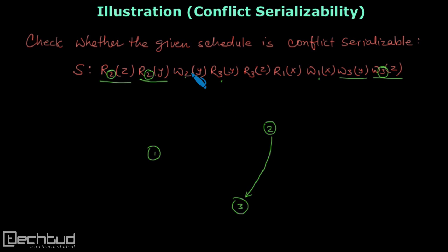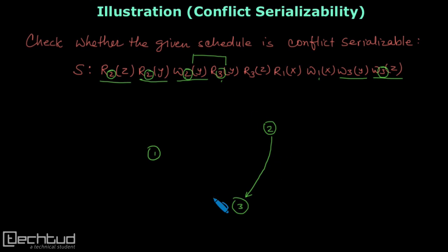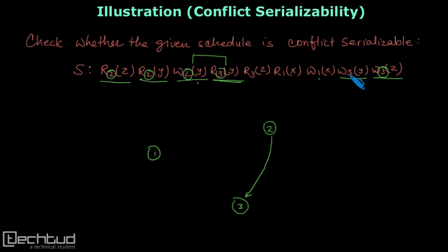Now, W2Y is a write operation, so any read or write from another transaction on Y will create a conflict. On Y we have a read from transaction 3, so this is a conflicting pair and the edge is from 2 to 3, which already exists. Now let's take R3Y. On Y we need to find a conflicting operation, but the operation on Y here is from the same transaction, so no edge.